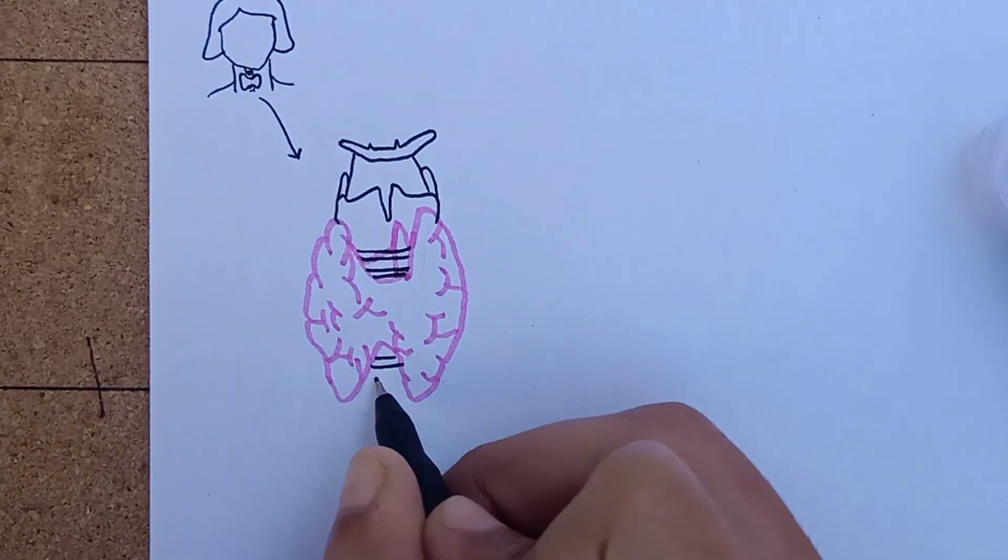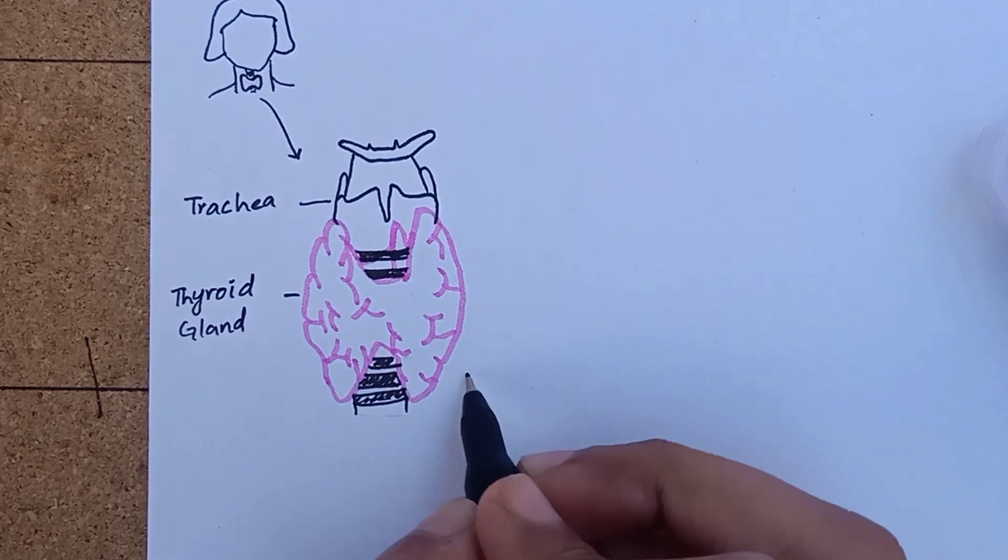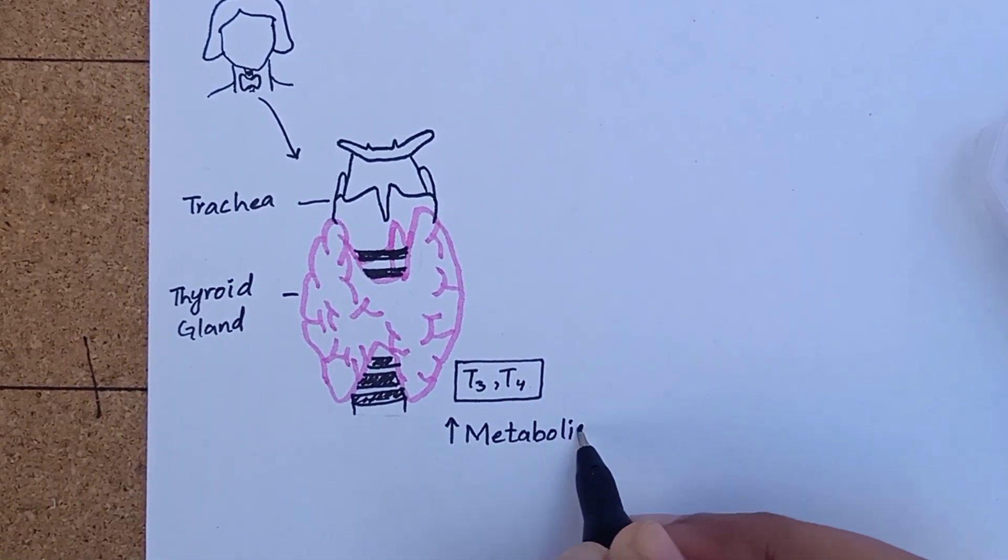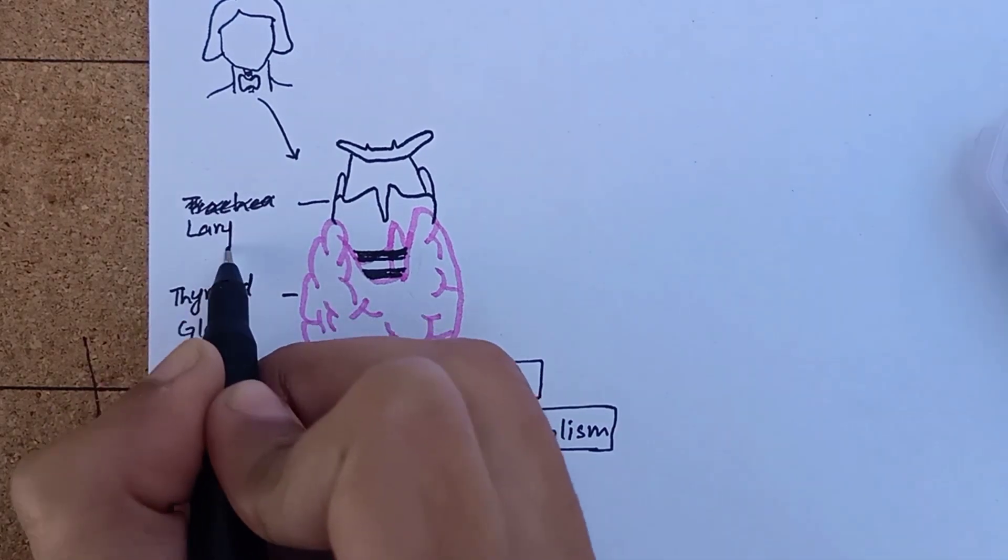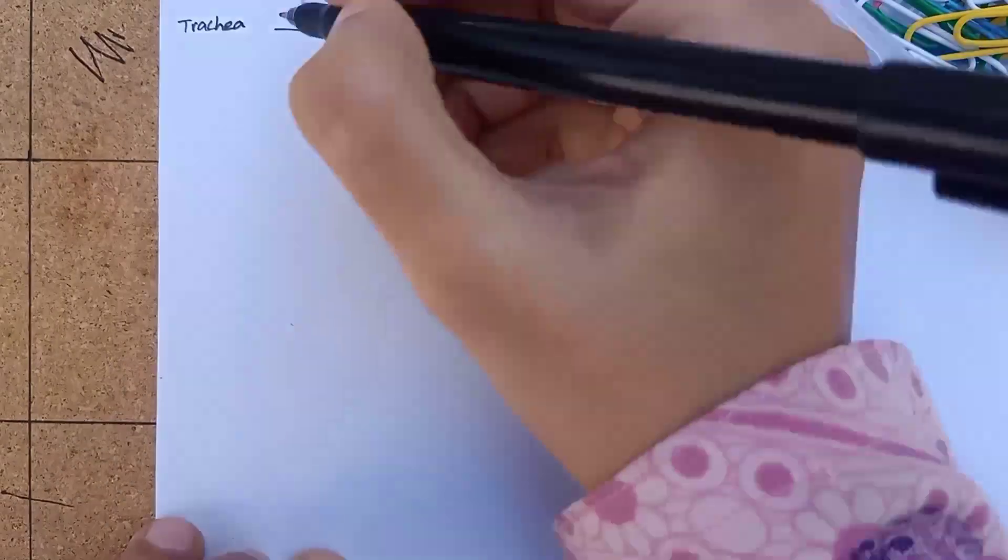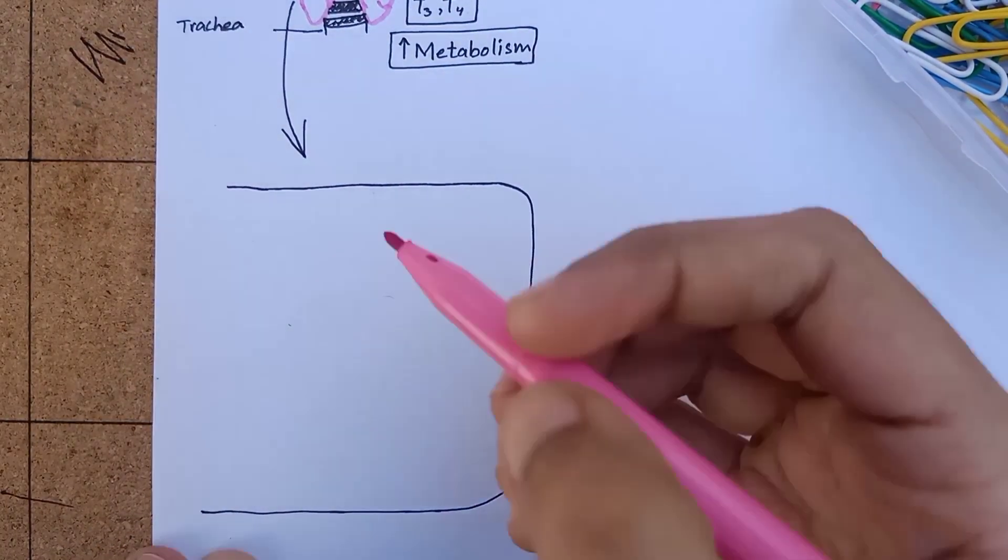Thyroid secretes two major hormones: triiodothyronine and thyroxine, commonly known as T3 and T4 respectively. Both of these hormones profoundly increase the metabolic rate of our body. Let's have a look at the physiological anatomy of the thyroid gland.